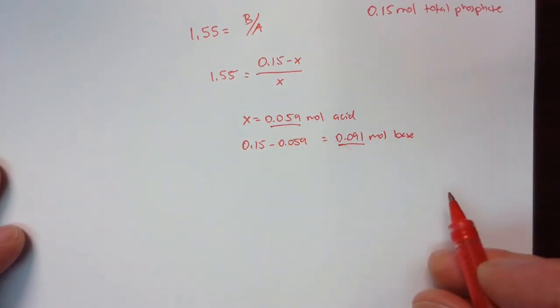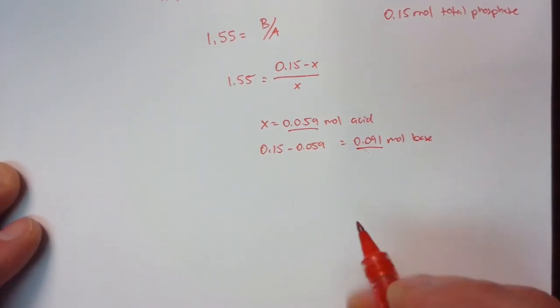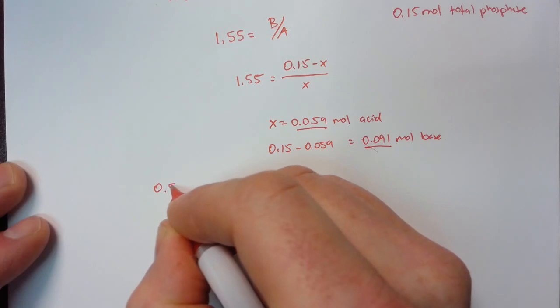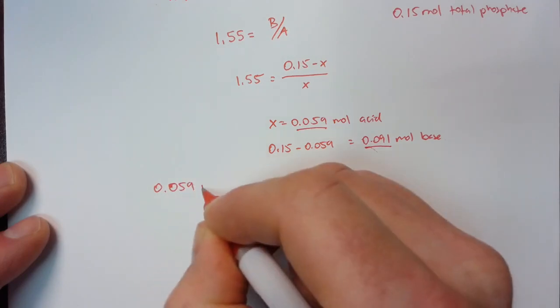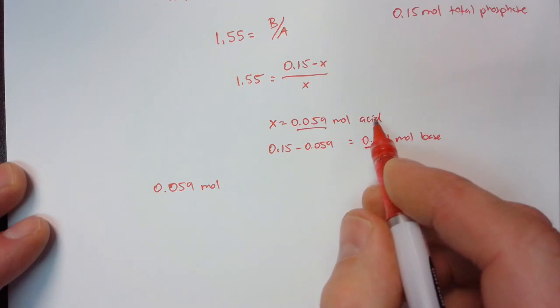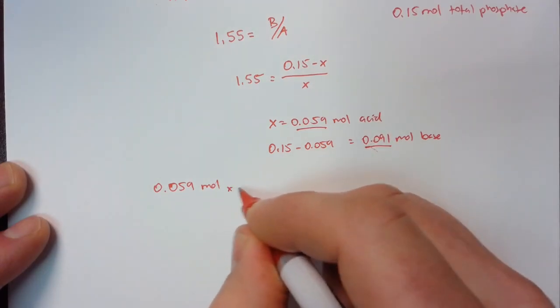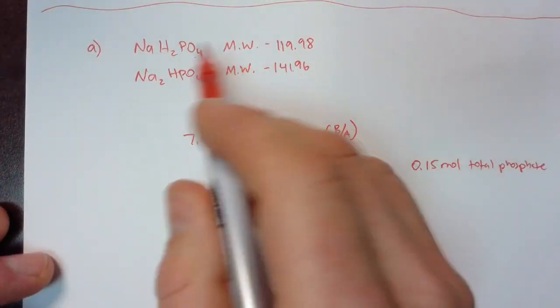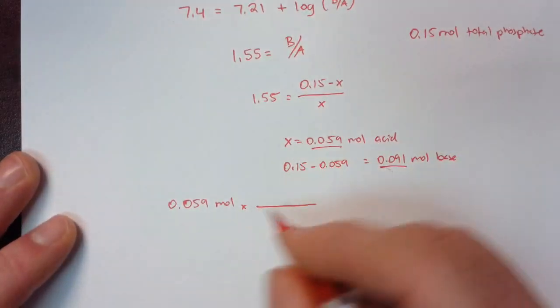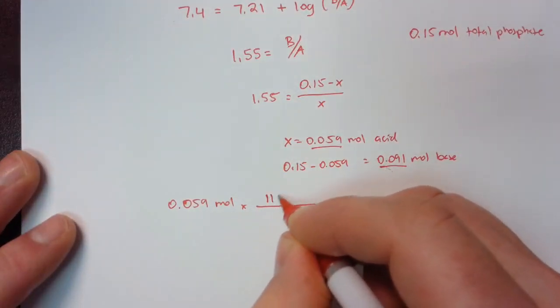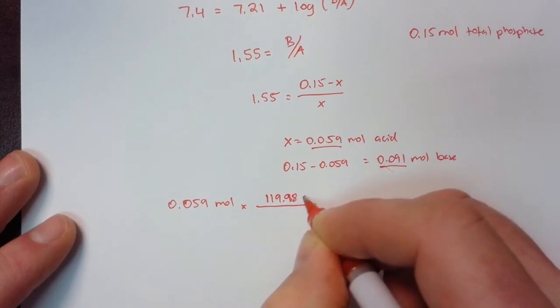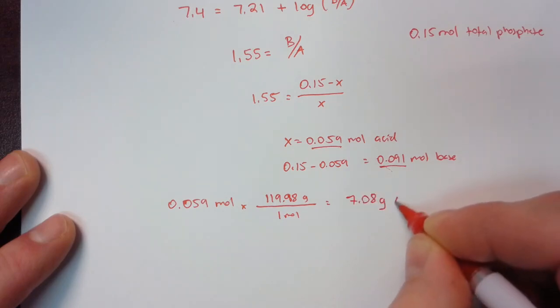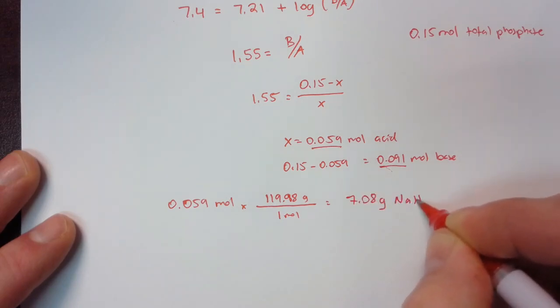All right, now from here it's just a simple general chemistry problem where we are going to solve for the grams of mono and dibasic salts. So moles of acid here. And I told you that the molar mass of the acid form, which is this one, is 119.98. And so that comes out to 7.08 grams of NaH2PO4.